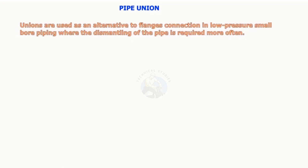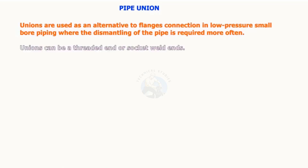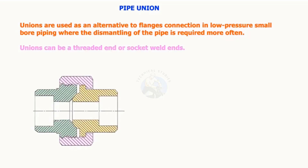Pipe unions are used as an alternative to flange connection in low pressure small bore piping where the dismantling of the pipe is required more often. Pipe unions can be a threaded end or socket weld end.